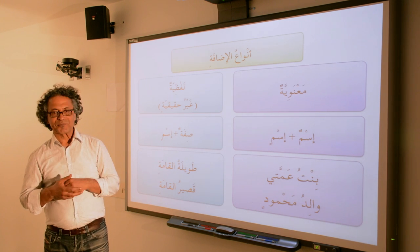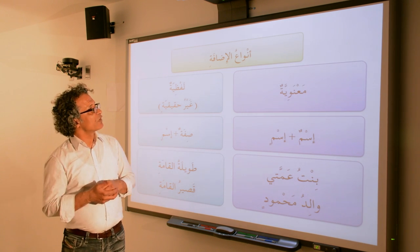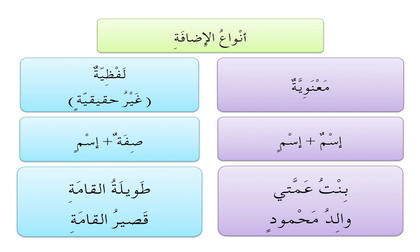أنواع الإضافة — the types of إضافة. The إضافة can be معنوية, meaning semantic or the true إضافة, or لفظية, meaning it has to do only with form and words. The لفظية is also called غير حقيقية — the unreal إضافة — because it is somewhat different. The معنوية is اسم مع اسم: a noun followed by a noun.